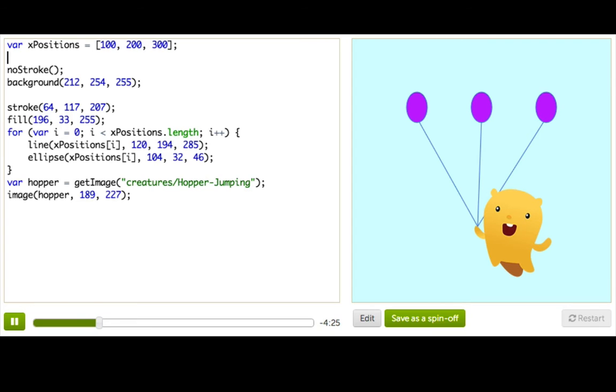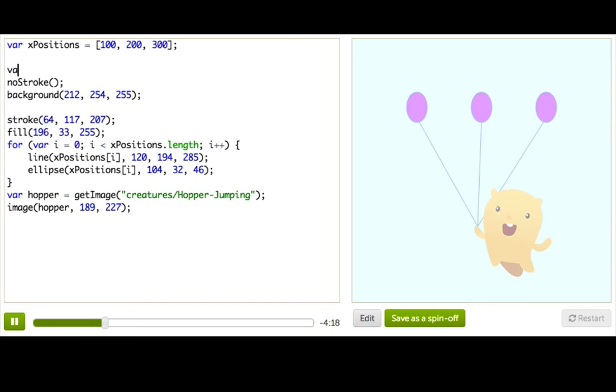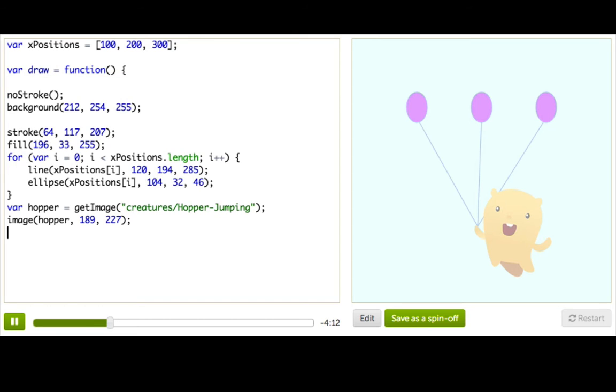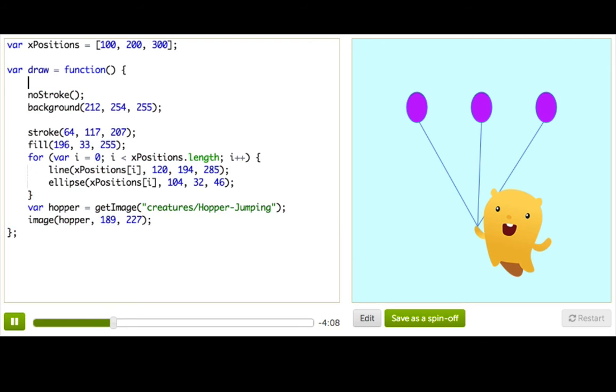All right. So we want our program to be changing over time, right? Every time the user clicks, a balloon is going to show up there. So let's start off by moving everything into a draw function so that it's easy to change over time. So we'll just move this down here and indent this here. Okay, great.